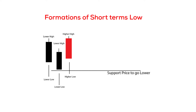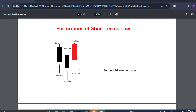When the short-term low forms in the market, we have to have at least two lower lows first, followed by a higher low which acts as a higher high. Once price creates a lower low in the market, we wait for price to take out the middle candle for us to have a short-term low. The formation of a short-term low occurs when price creates a lower low followed by a higher low which takes out the previous lower high, and this acts as a support for price to go lower.